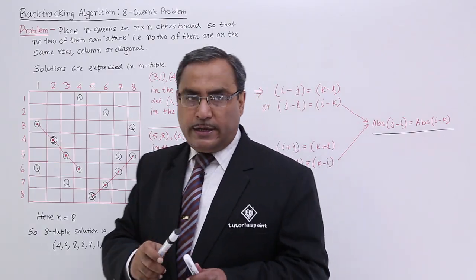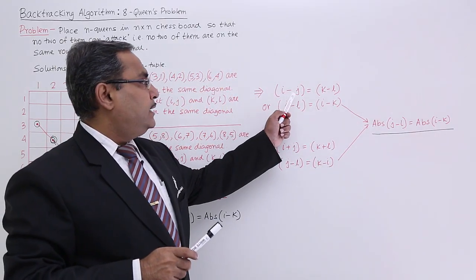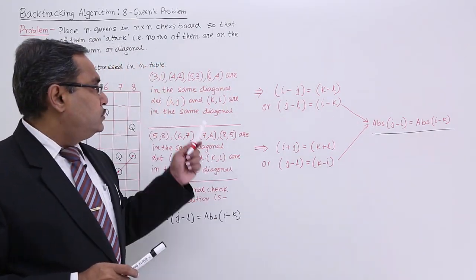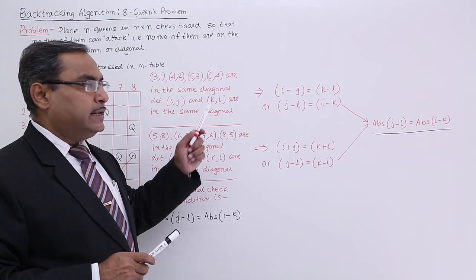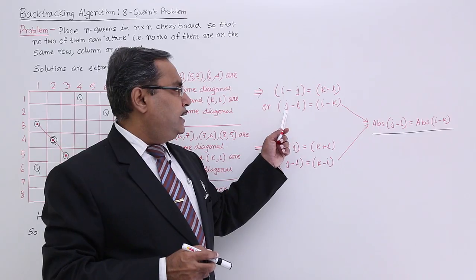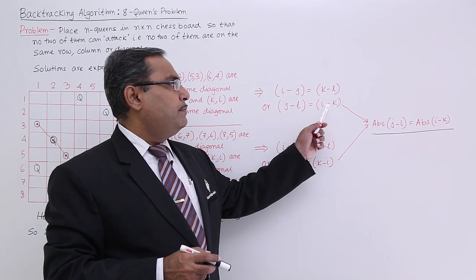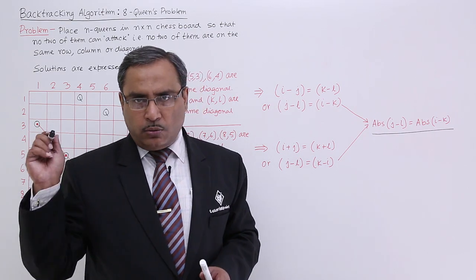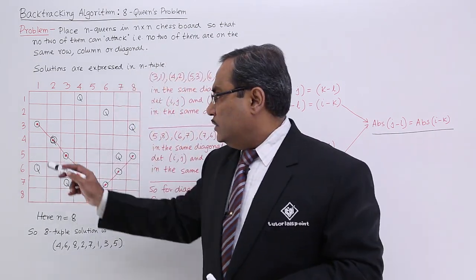I can write from this, I can write here that is i minus j is equal to k minus l. So i minus j is equal to k minus l. Now, I can also write in this way that is j minus l is equal to i minus k. So this is for the diagonal whatever we have shown this one.